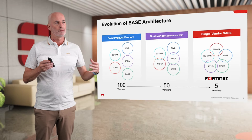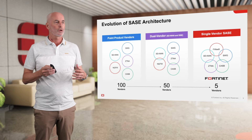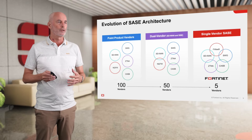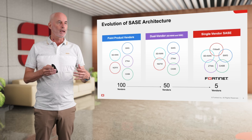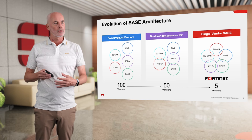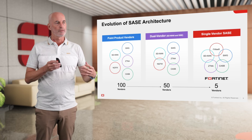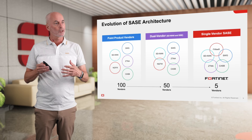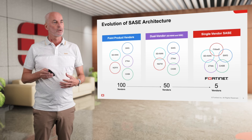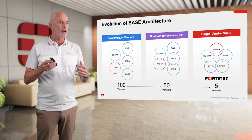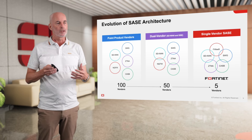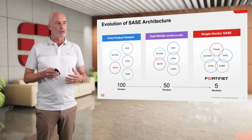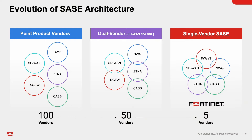This has converged to what we call a dual vendor strategy, mainly with SD-WAN vendors and NextGen Firewall integrated, and then the Secure Services Edge vendors, which takes a cloud view of Secure Web Gateway, ZTNA, and CASB. There are fewer vendors there, but still quite a few.